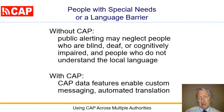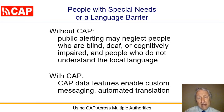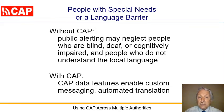Many people in harm's way are underserved with current public alerting because they are blind, or deaf, or cognitively impaired, or they don't understand the language used in the alert. These people can be better served by exploiting the data in CAP alerts as well as leveraging automated translation.